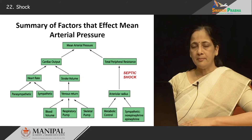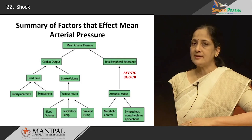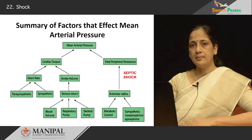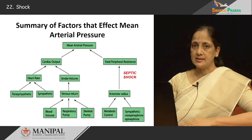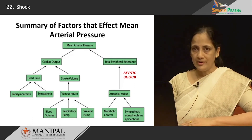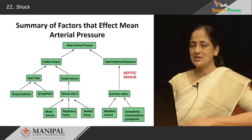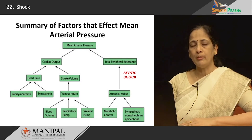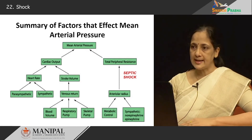Comparing septic shock to cardiogenic and hypovolemic shock: in the earlier types, compensatory mechanisms cause peripheral vasoconstriction, redistributing blood to vital organs, so if you touch a person in cardiogenic or hypovolemic shock, you find that their skin is cold and clammy. However, in septic shock, there is vasodilatation, so when you touch these patients, you find that the skin is warm and dry because of that peripheral vasodilatation.